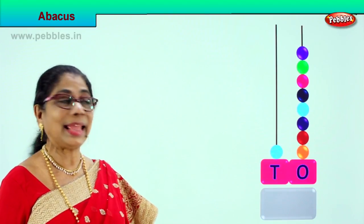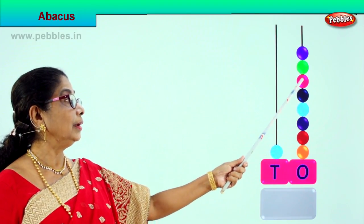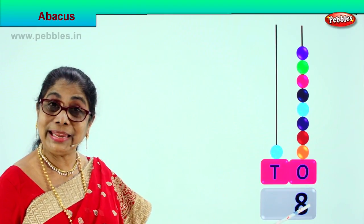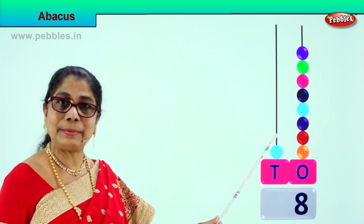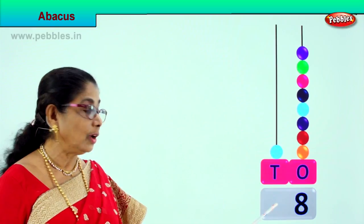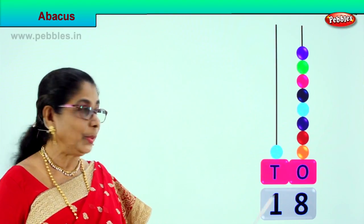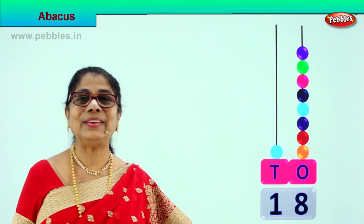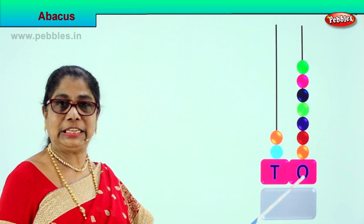Let's take another sum. Let's count: 1, 2, 3, 4, 5, 6, 7, 8 — there are 8 beads in the ones place, so we write 8, meaning 8 ones. In the tens rod we have only 1 single bead — that is 1 ten. So we write 1 in the tens place. 1 ten plus 8 ones is eighteen. This is the ones place, this is the tens place — 1 ten and 8 ones: 18.